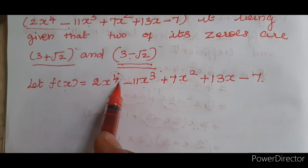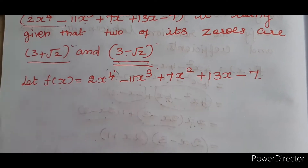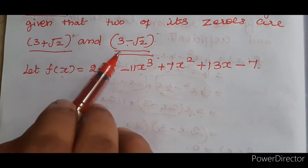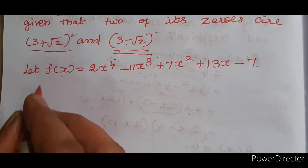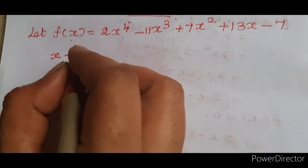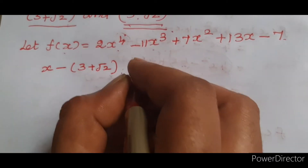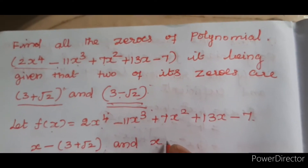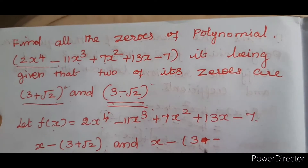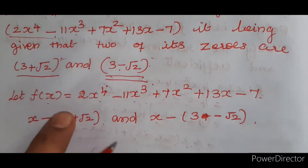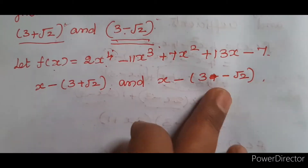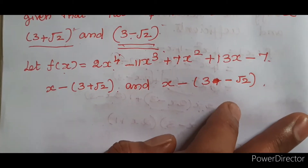Since the degree of the polynomial is 4 and 2 zeros are already given, 2 more zeros have to be found. If 3 plus root 2 and 3 minus root 2 are zeros of this polynomial, then x minus (3 plus root 2) and x minus (3 minus root 2) are factors of this equation.